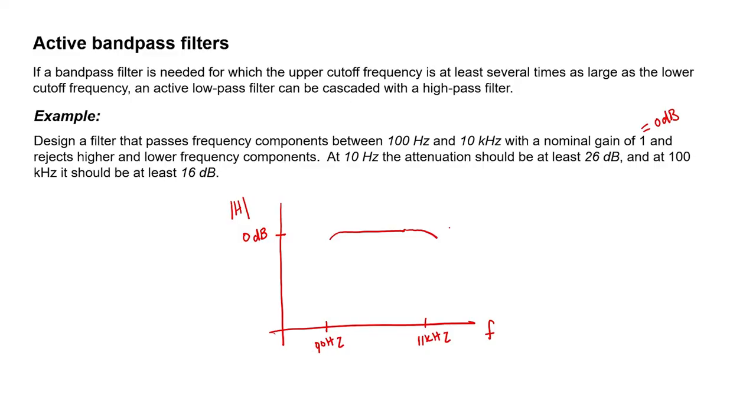We're told at 10 Hz, the attenuation should be at least 26 dB. That means that a one-pole filter, for example, wouldn't be able to do the job. A two-pole filter though would roll off at 40 dB per decade, that would work. That ensures that when we're down by one decade, that is when we're down at 10 Hz, we'll be at negative 40 dB.